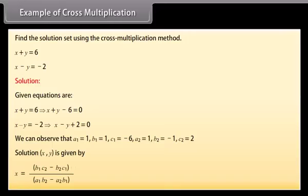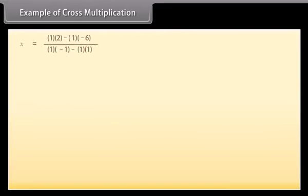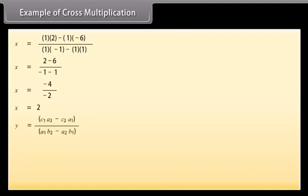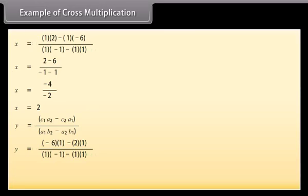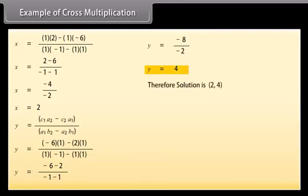Using the cross multiplication formula: x = (b1c2 − b2c1) / (a1b2 − a2b1) = (1×2 − (−1)×(−6)) / (1×(−1) − 1×1) = (2 − 6) / (−2) = 2. And y = (c1a2 − c2a1) / (a1b2 − a2b1) = (−6×1 − 2×1) / (1×(−1) − 1×1) = (−8)/(−2) = 4. Therefore the solution is (2, 4).